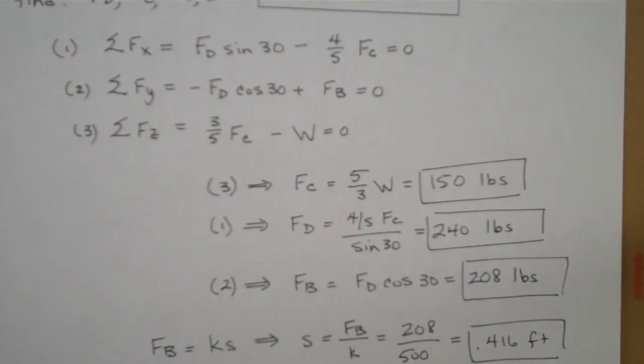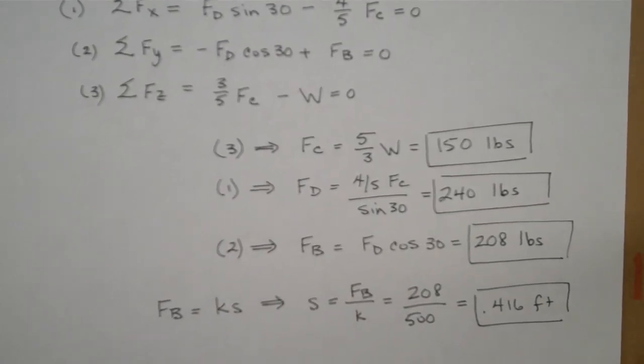Using equation 3, I was able to solve for what FC was. So FC would be 5 thirds of the weight or 150 pounds. Using equation 1, now that we know FC, I can solve for FD is 4 fifths of FC divided by the sine of 30, which is 240 pounds. And using equation 2, I can now solve for what force B is: FD times the cosine of 30 or 208 pounds.